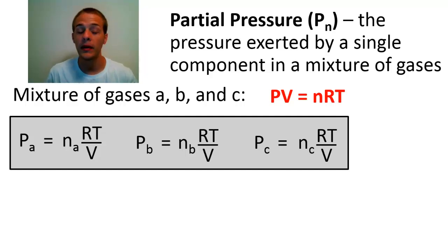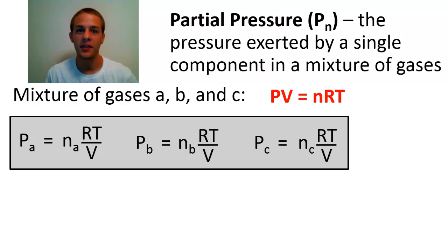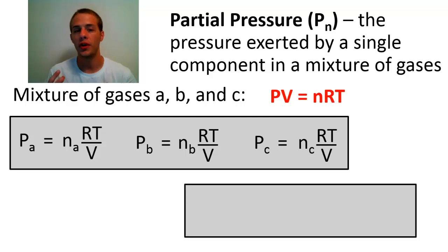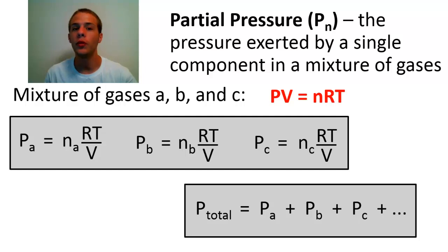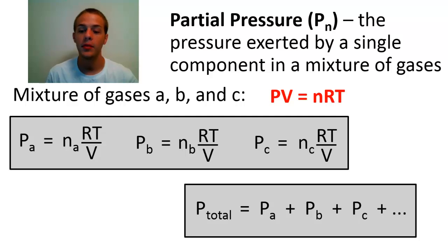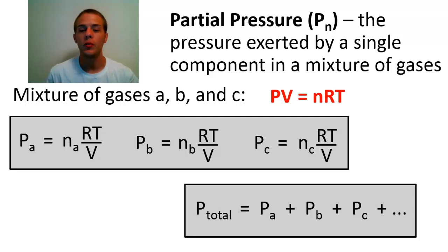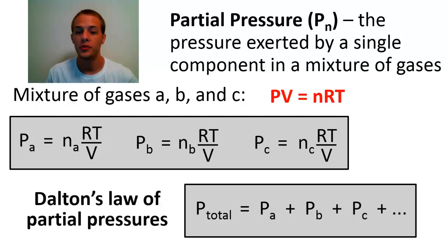It's also true that if these gases display ideal gas behavior — each behaving independently — the total pressure in the container is equal to the sum of the partial pressures: P total equals the pressure of A plus the pressure of B plus the pressure of C, plus any additional gases in the mixture. This relationship, where total pressure equals the sum of the partial pressures, is what we call Dalton's Law of Partial Pressures.